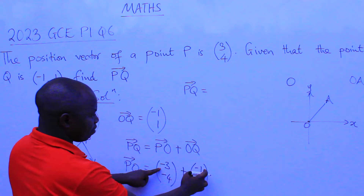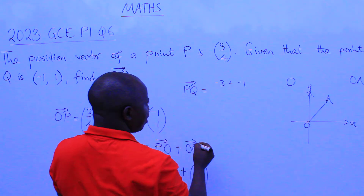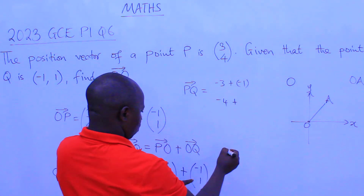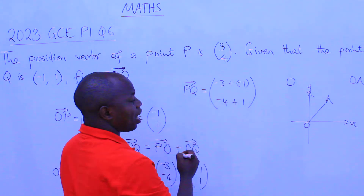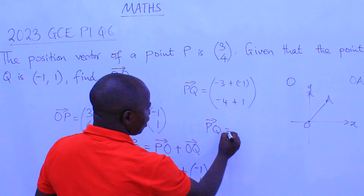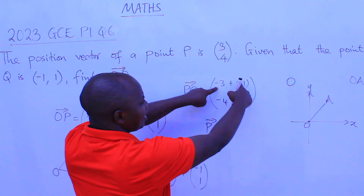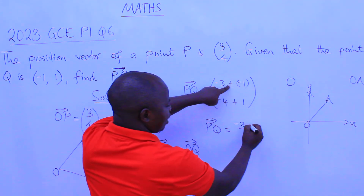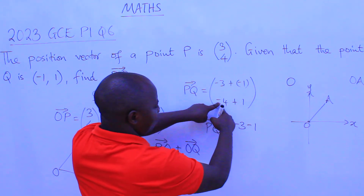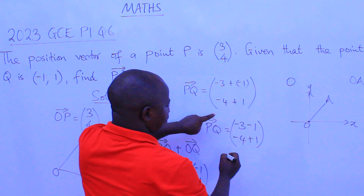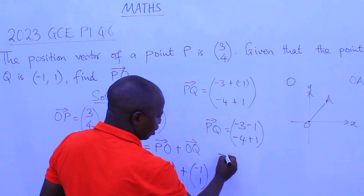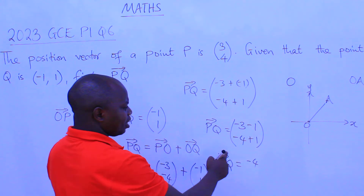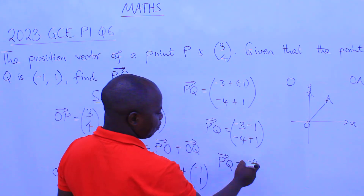Now we do the addition. We have (-3) plus (-1) for the top component, and (-4) plus 1 for the bottom component. So PQ equals: negative 3 plus negative 1 gives us negative 4, and negative 4 plus 1 gives us negative 3.